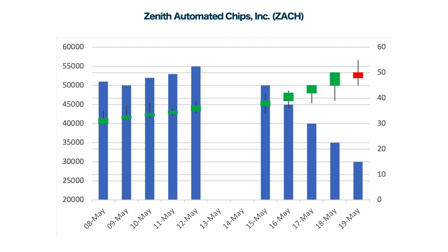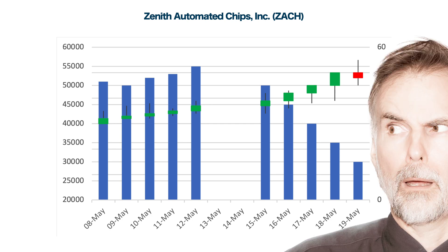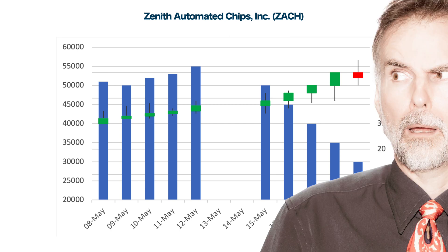At the top of the chart is the title and the source of the data is on the bottom right. Along the bottom is a column chart showing the amount of shares traded over a two-week period. Above is a candlestick chart showing the opening price, the highest traded price, the lowest traded price, and the closing price.